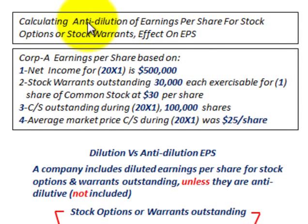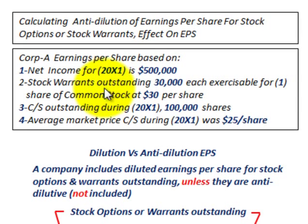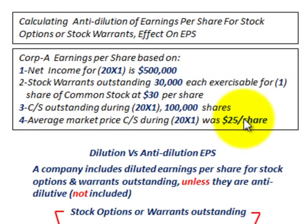What we're going to be looking at is calculating the anti-dilution of earnings per share for stock options or stock warrants and the effect they have on the earnings per share of the company. Corporation A's earnings per share is based on: the net income for the year is $500,000 and they have 30,000 stock warrants outstanding, each exercisable for one share of common stock at $30 per share. The common stock outstanding during the year was 100,000 shares, and the average market price of the common stock during the year was $25 per share.